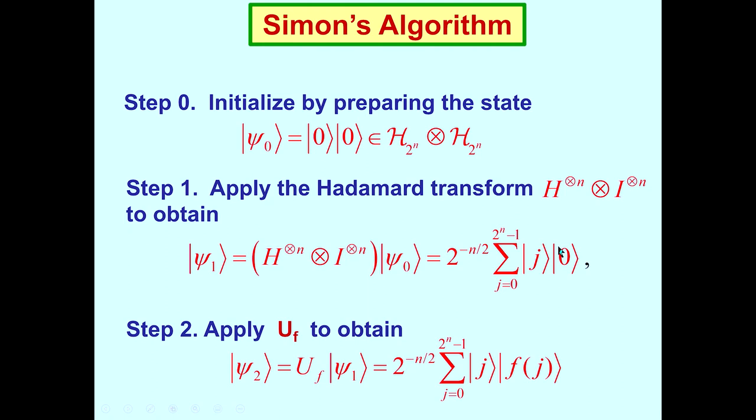Here is Simon's algorithm. Step 0. Initialize by preparing the following state. Essentially, the first ket 0 represents a binary string of length n of all 0s. And so does the second. And so we initialize it to this element in the Hilbert space, H2 to the n tensor H2 to the n.